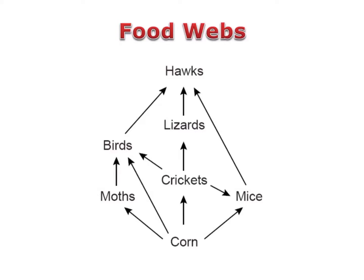Food webs are diagrams that show all of the different food chains in an ecosystem. Because many species are a part of more than one food chain, it's easier to study all of the relationships between producers and consumers in an ecosystem using a food web.